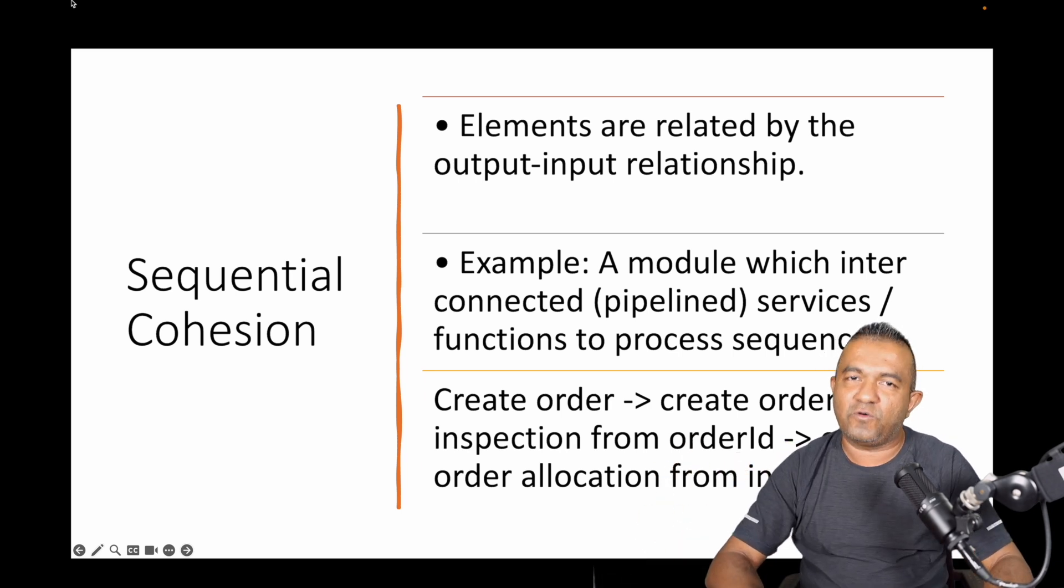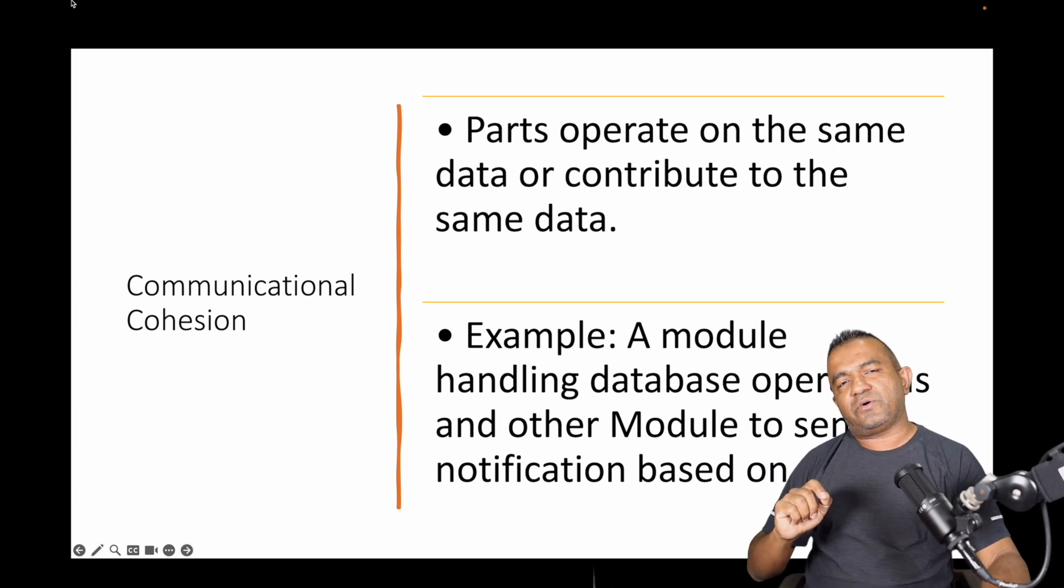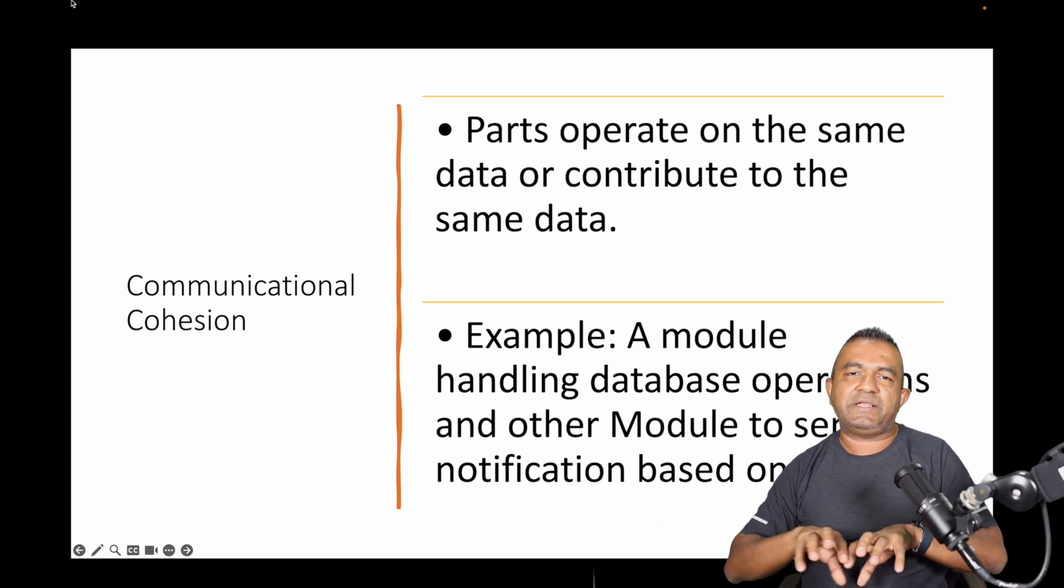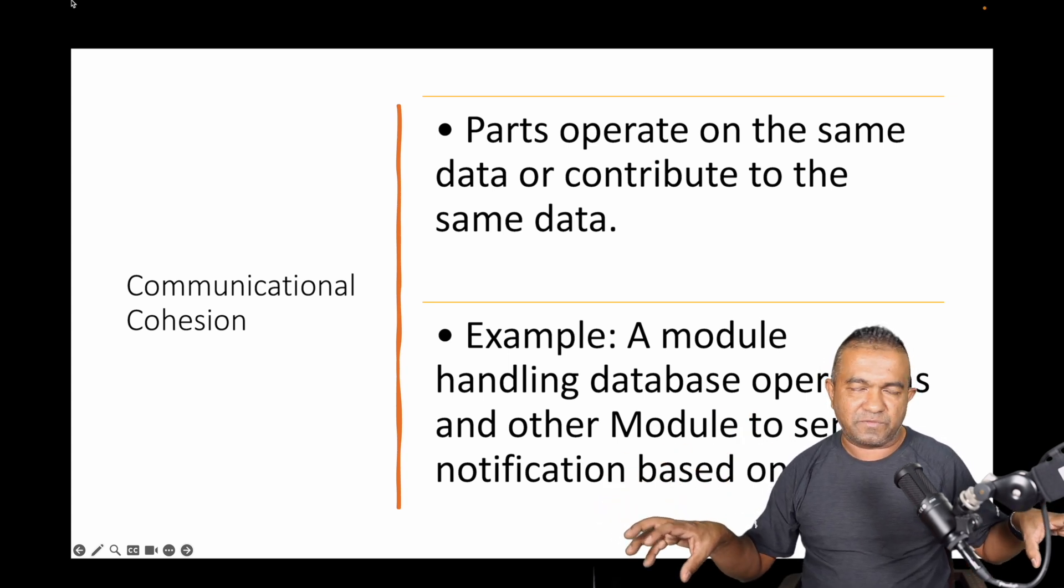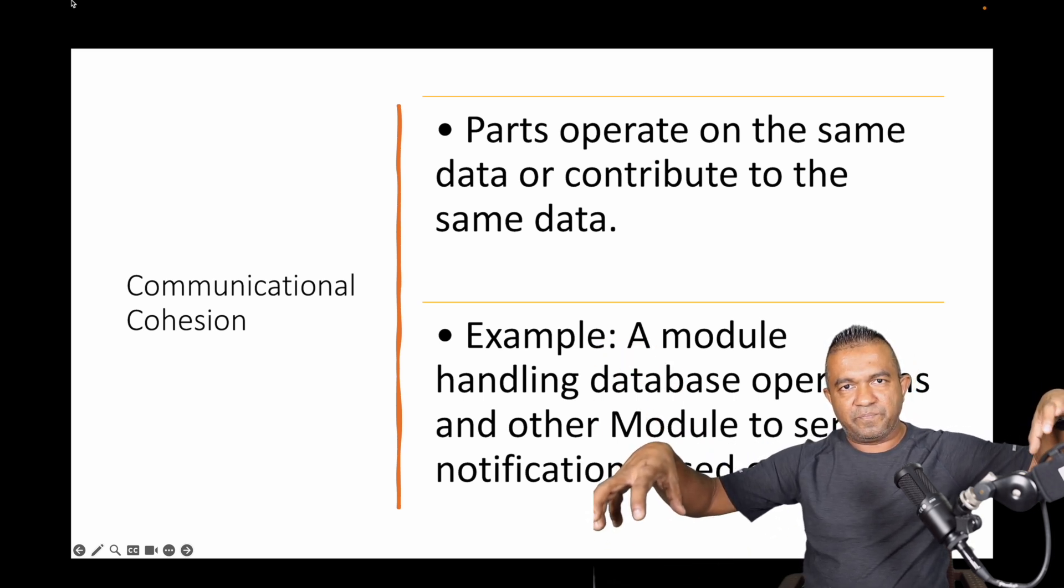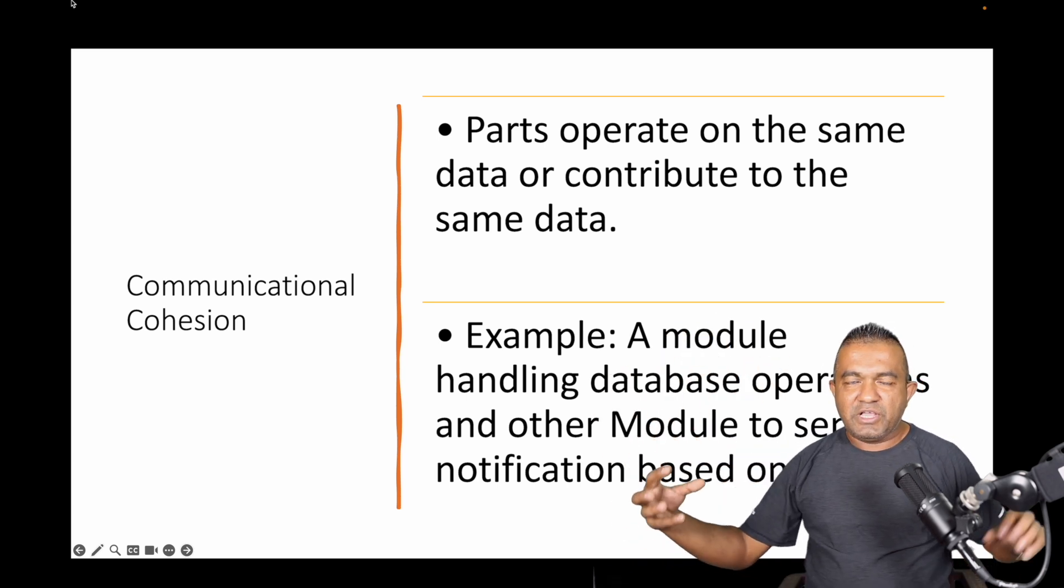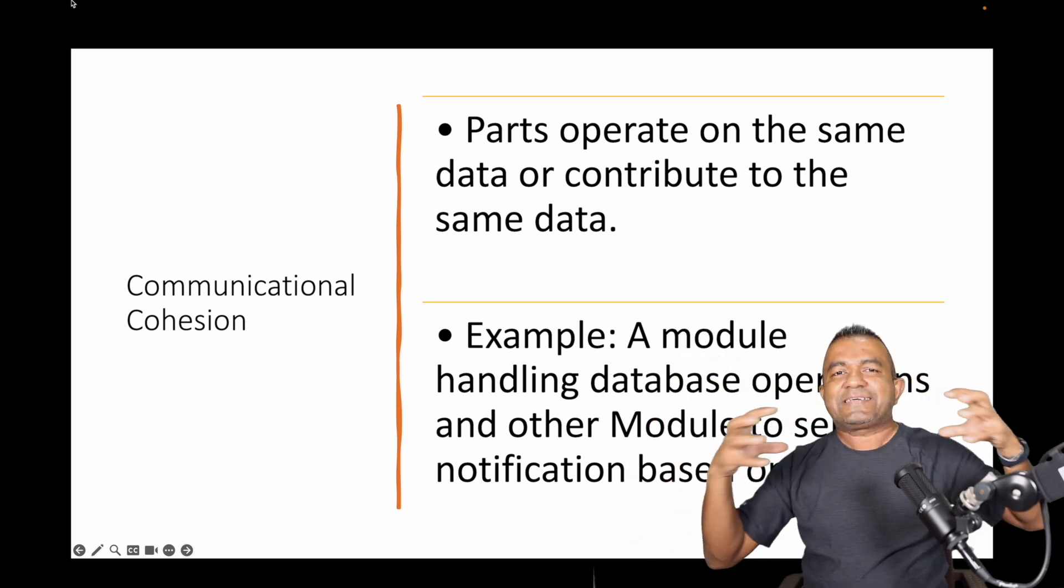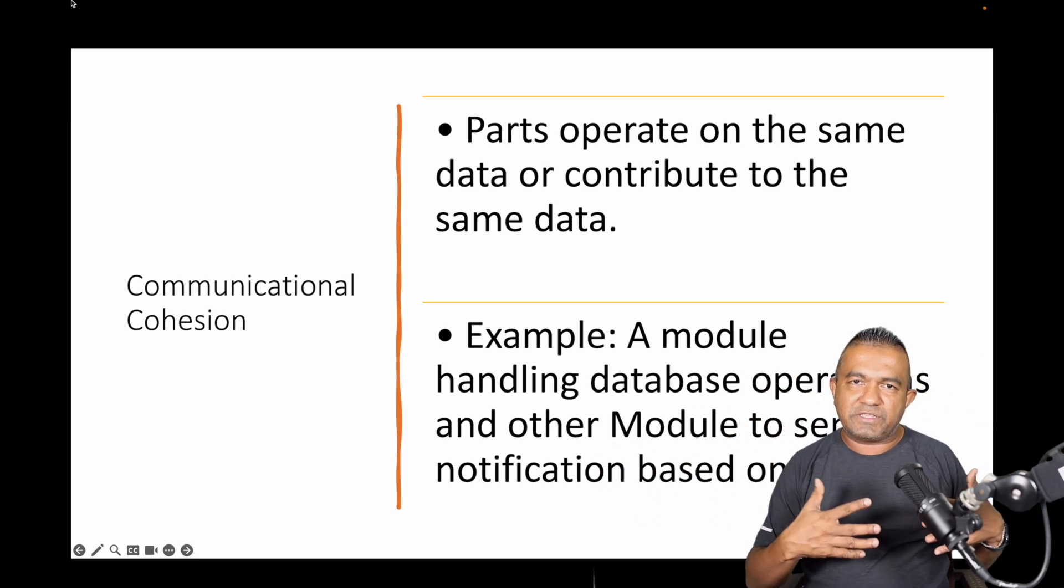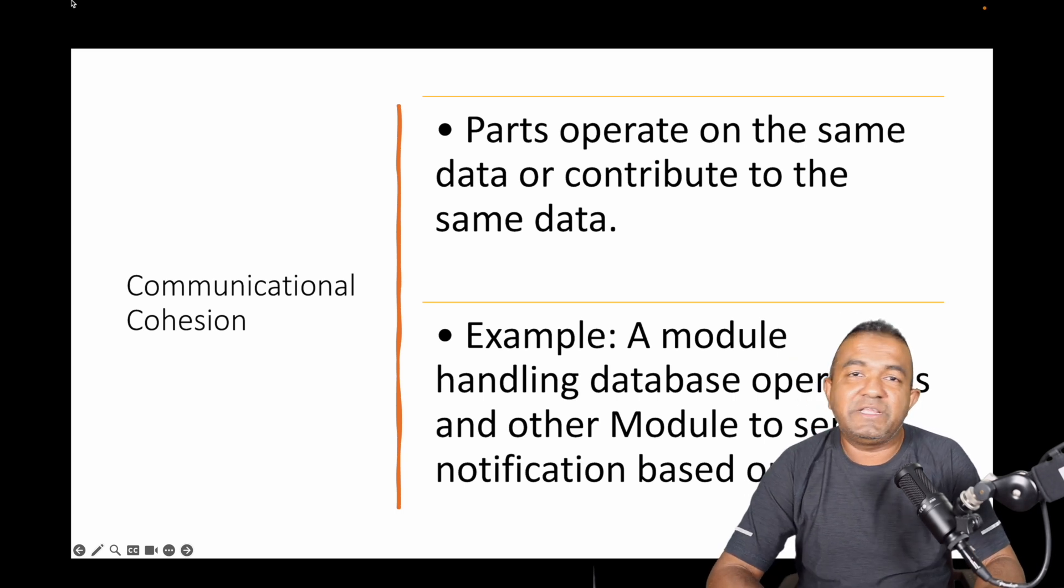The communication cohesion is again like chaining like the previous one, but it's completely different modules. For example, you have an order module and a notification module. You create the order and after you create the order you need to send a notification. So they're interconnected but stay completely separate, and they talk to each other based on the communication requirement. That is communication cohesion.